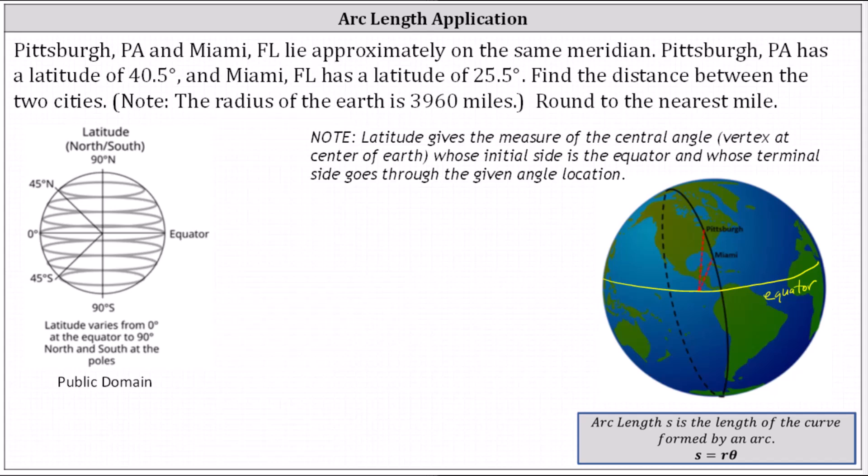So looking at the image of the Earth, we have Pittsburgh here at the top and Miami here at the bottom. Because the latitude of Pittsburgh is 40.5 degrees, this angle here would be 40.5 degrees.